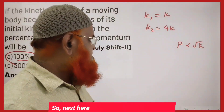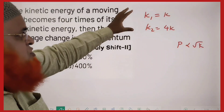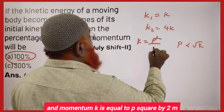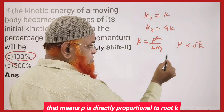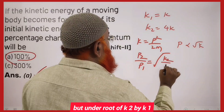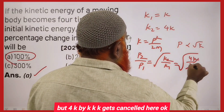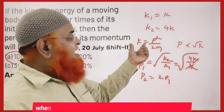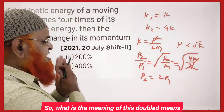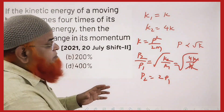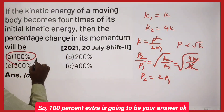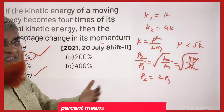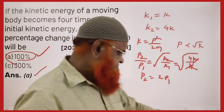Next: the kinetic energy of a moving particle becomes 4 times its initial value k. Using K = p²/2m, momentum p is proportional to √K. So p₂/p₁ = √(K₂/K₁) = √(4k/k) = √4 = 2. Momentum has doubled, meaning it increased by 100%. So the percentage change in momentum is 100%.